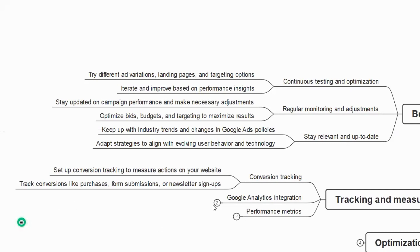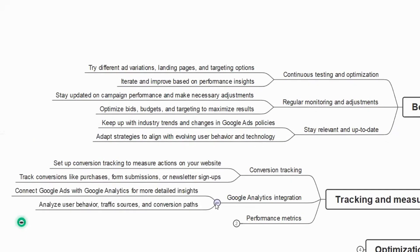The next tracking method is Google Analytics integration — connect Google Ads with Google Analytics for more detailed insights, including user behavior, traffic sources, and conversion paths. When you connect both accounts, you get all these details. A video on how to link both accounts is available — click the 'I' button to access it.